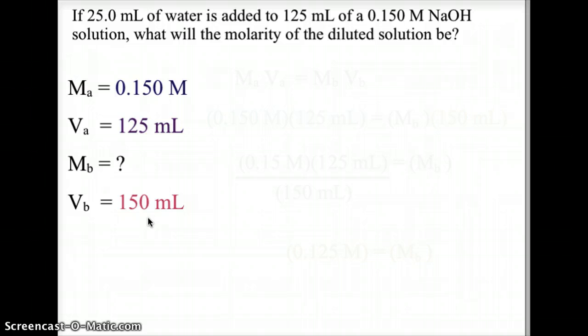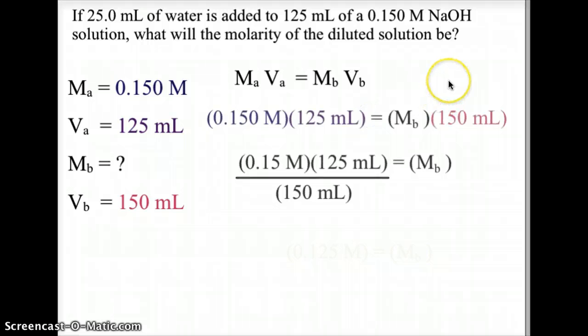Using the equation MAVA equals MBVB, we can plug in our values and solve algebraically. So 0.15 molar times 125 milliliters divided by 150 milliliters will isolate the molarity value. And in this case, that comes out to be 0.125 molar.